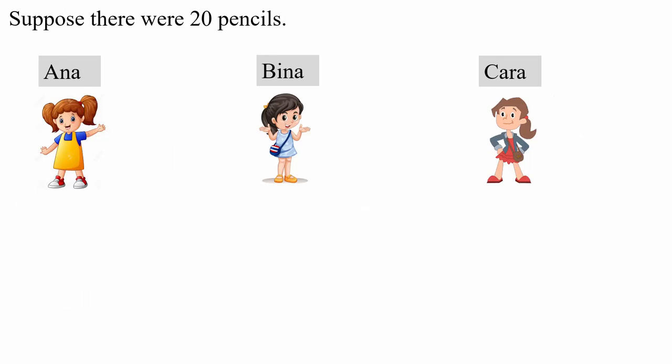We could use a trial and error approach. Let's suppose there were 20 pencils to begin with. So Anna will receive half of 20 plus another half, which comes out to be 10 and a half pencils. But wait a moment, there's something wrong, isn't there? It's broken one of the rules — we can't have half a pencil. So starting with 20 pencils was not a good idea. It doesn't work.